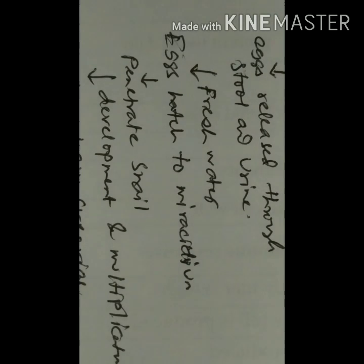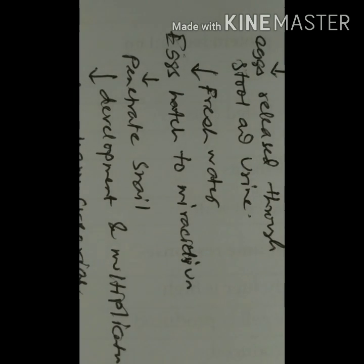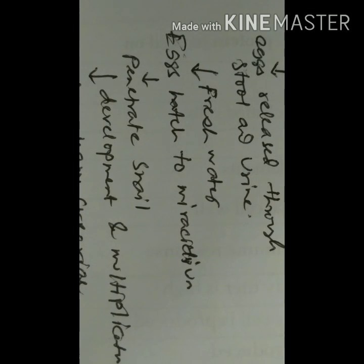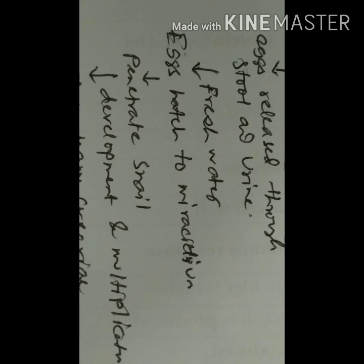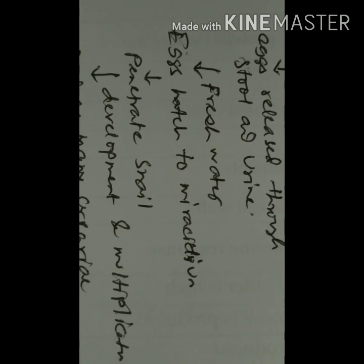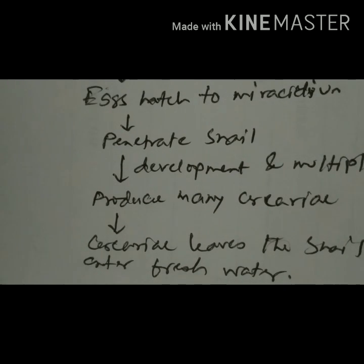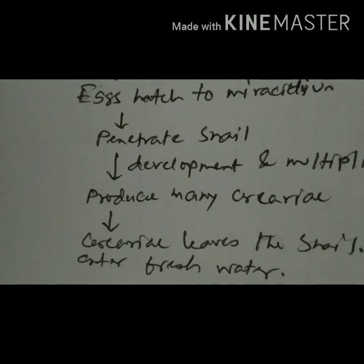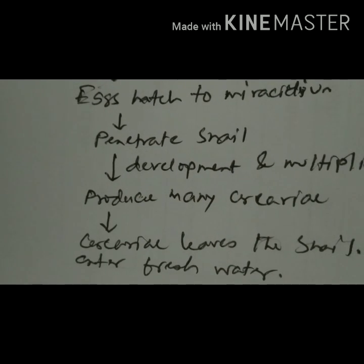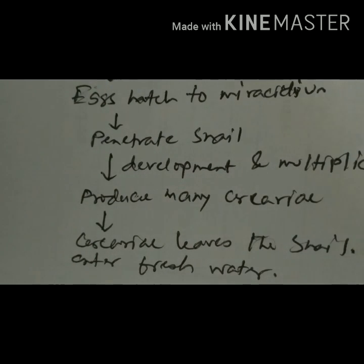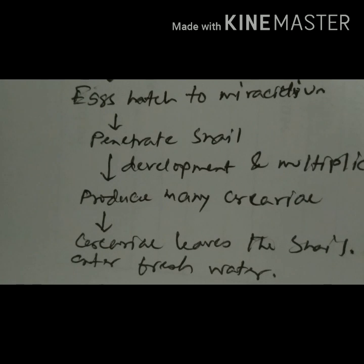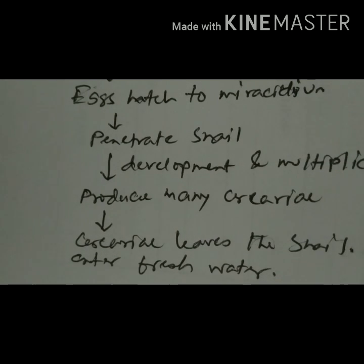Eggs must come in contact with fresh water to hatch. Once hatched, the ciliated larva or miracidium penetrates the snail. In fresh water, the miracidium further develops and multiplies in the snail to form cercariae. Many cercariae are produced, which leave the freshwater snail and start swimming in the fresh water, completing the life cycle by penetrating the human skin.